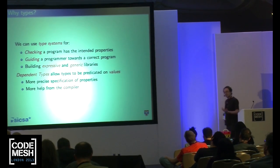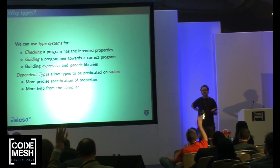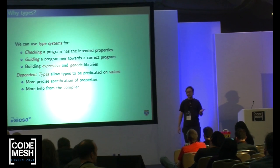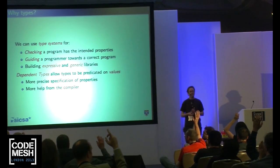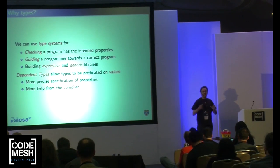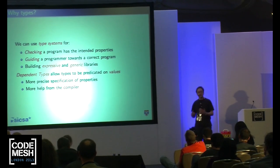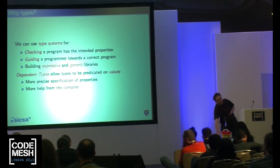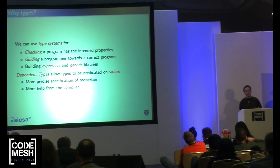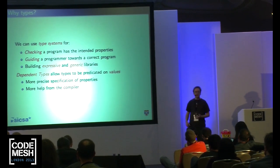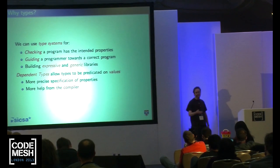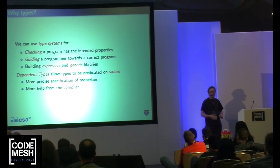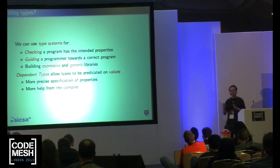Now, dependent types. The characteristic thing is really that they allow types to be predicated on values. Whereas previously you might say my type is 'list', with dependent types I could say I have a list of five things, or a list of n things, or a list of n plus n things. Because we can predicate types on values, we can be more precise about what kind of behavior a program might have. I'm going to illustrate this idea with several hundred examples.